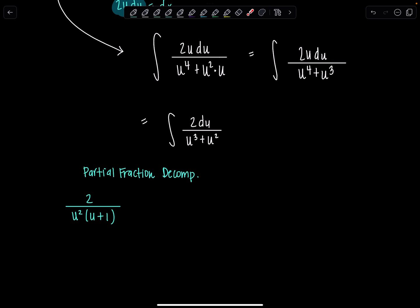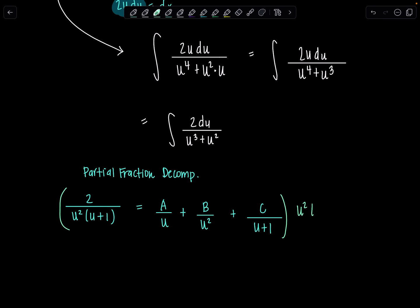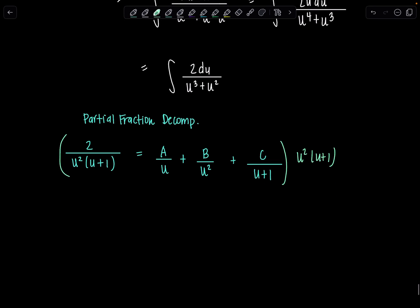Notice this u squared is a repeated linear factor. So we have to list out the decomposition as follows: we're going to have A over that linear factor to the first power, then keep increasing the exponent — B over u squared, plus C over u plus 1. Had this been u cubed, I would have had another term and then D over u plus 1. Our next step is to multiply everything by the LCD, which is u squared times (u plus 1).